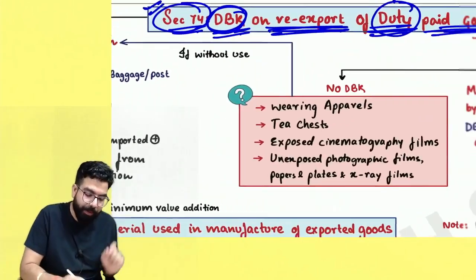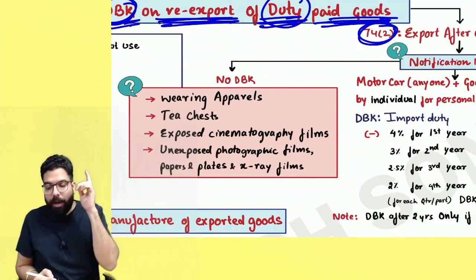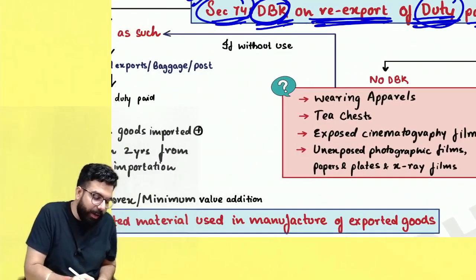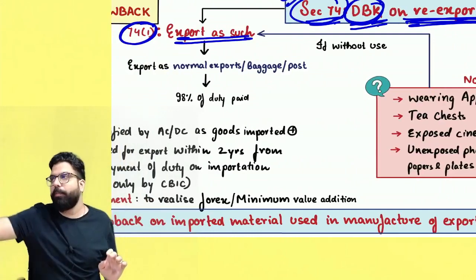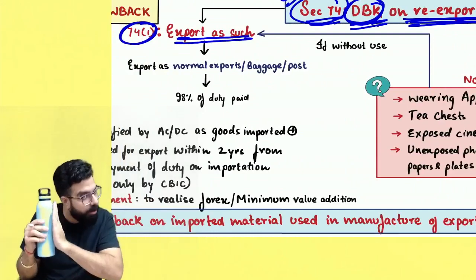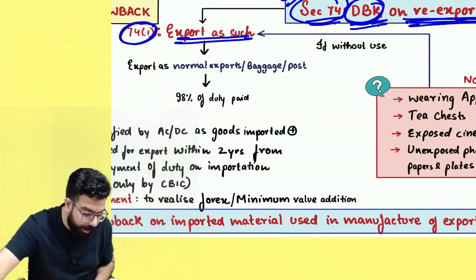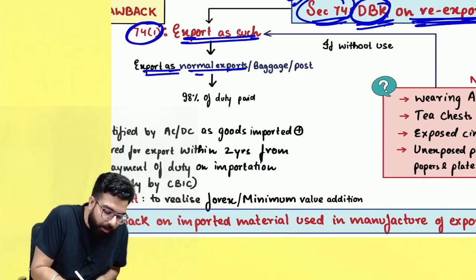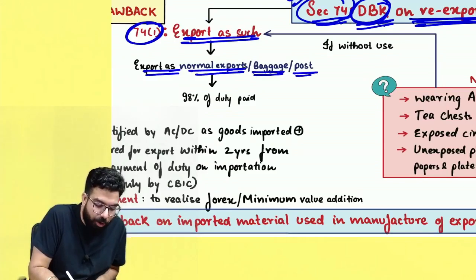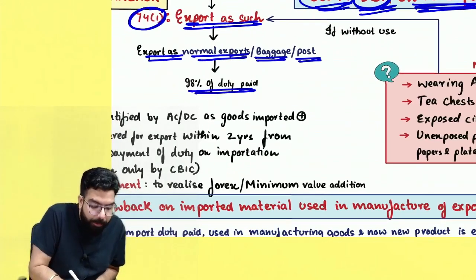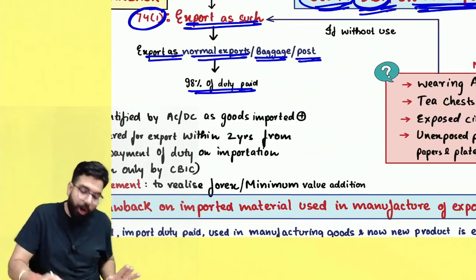Section 74 has sub-sections 74(1) and 74(2). Section 74(1) covers 'export as such' — I imported this bottle, did not use it at all, and exported it outside India. Whether exported as normal cargo, baggage, or by post, 98% of the duties paid will be given as duty drawback.